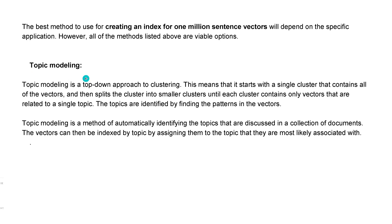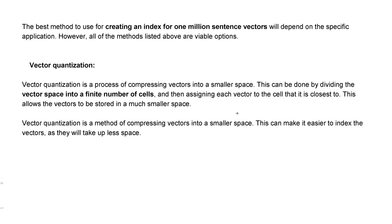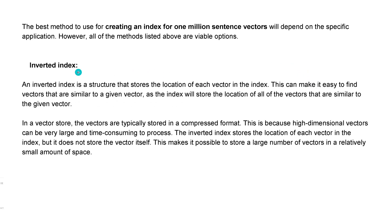The exact opposite is topic modeling — a top-down approach where everything starts in a single cluster containing all the vectors, then you split the cluster into smaller clusters and observe how those arrange. Third: vector quantization. You take a continuous vector space and divide it into a finite number of cells — the vector space is now discretized. This is a straightforward mathematical operation. Fourth: an inverted index, which stores the location of each vector in the index but not the vector itself. A vector can be 1,000- or 5,000-dimensional with large memory requirements, but if you just store a pointer to its location, operations can be much faster.